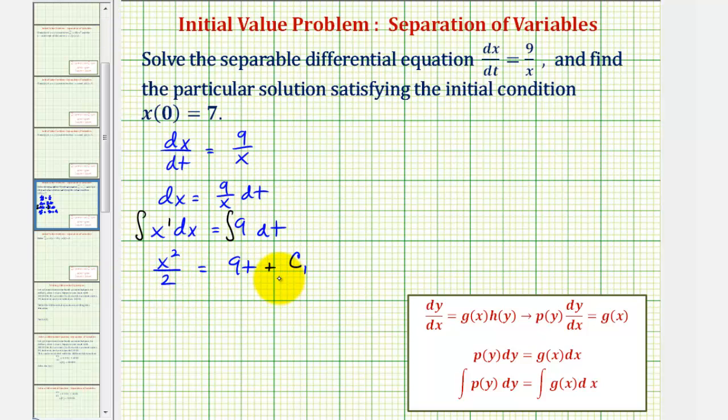And now for the next step, let's solve this for x squared. We'll multiply both sides of the equation by 2. So we'd have x squared equals 18t.